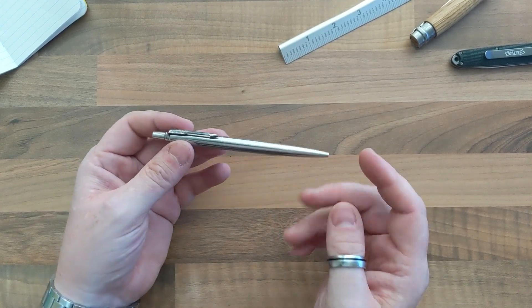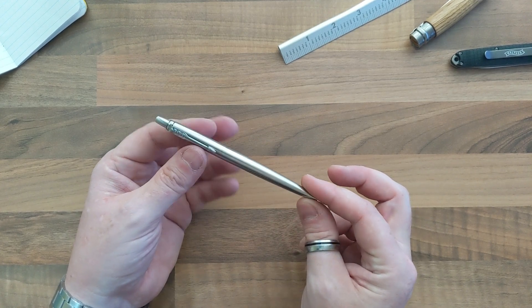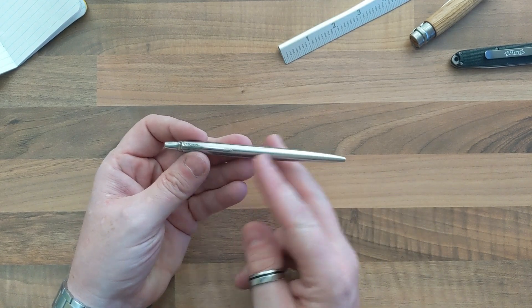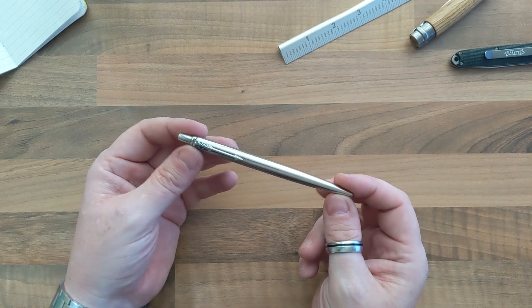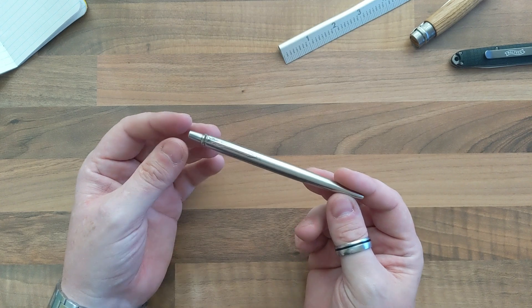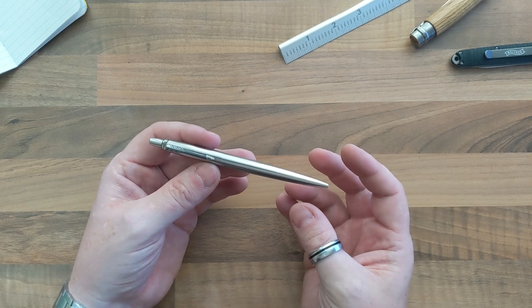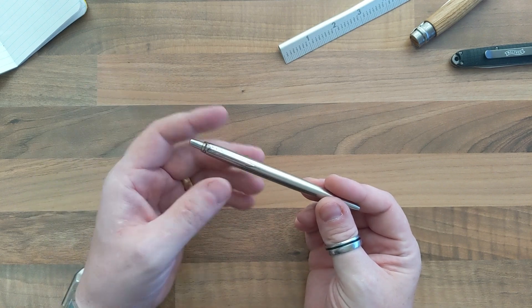So we're looking at the Parker Jotter. This is the stainless steel version of the Parker Jotter. The actual design of this has changed over the years.